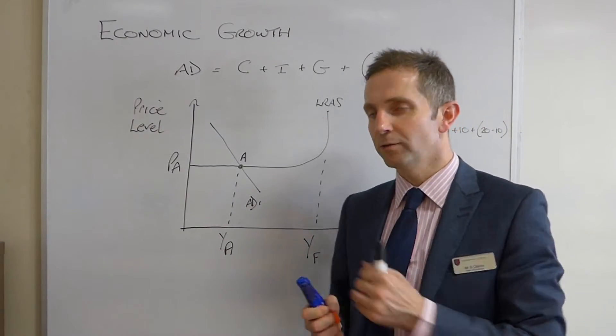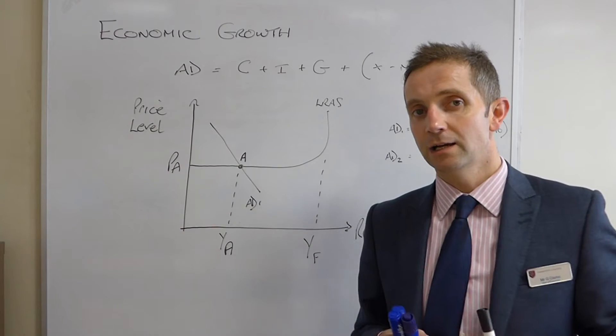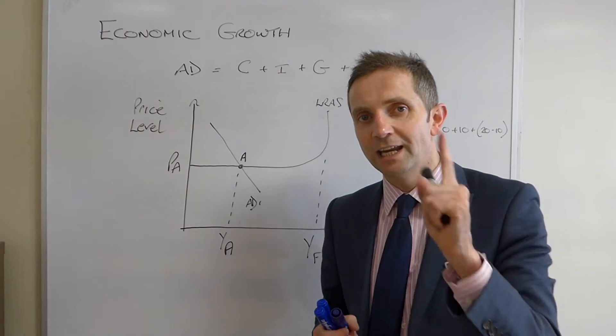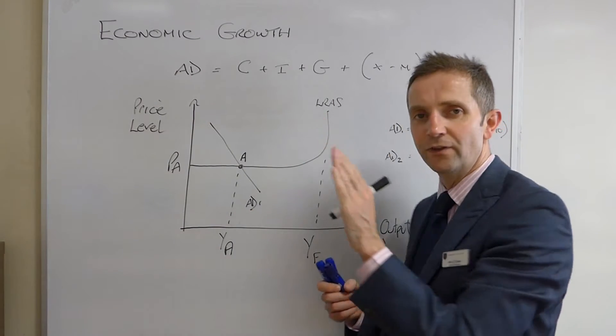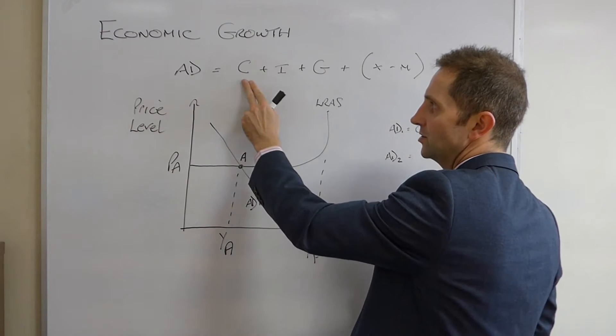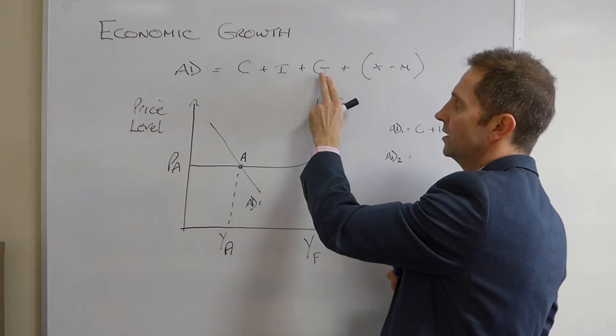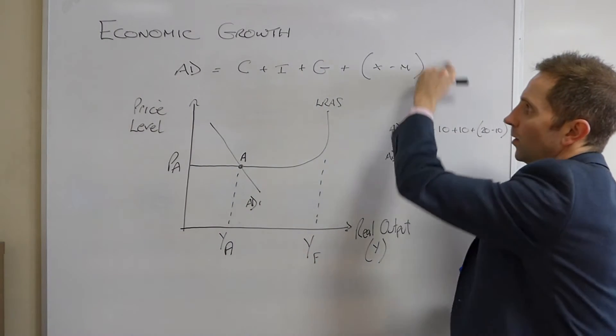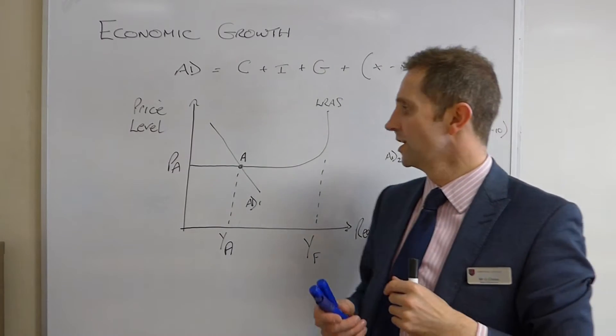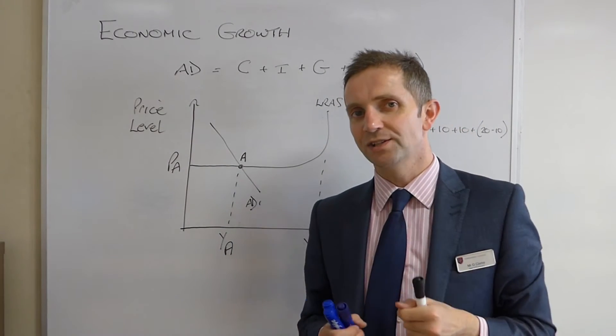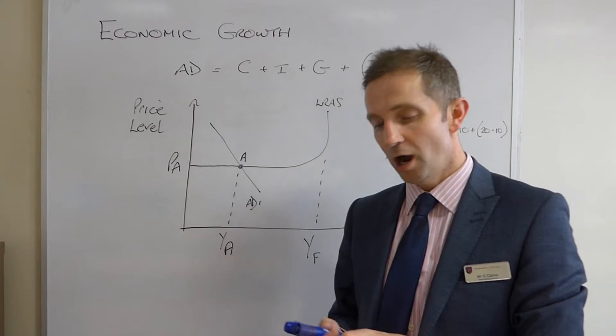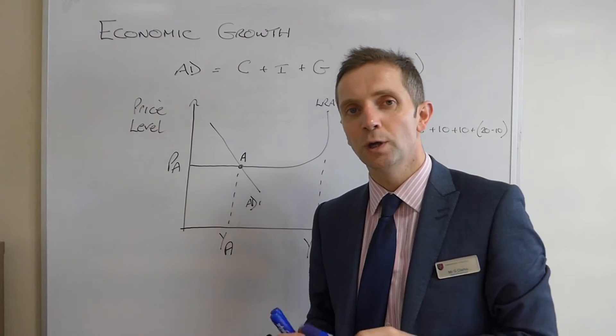So, we're going to be considering AD, and anything therefore, which increases the components of AD, so that would be consumption, investment, government expenditure, or as a whole, net exports. Anything which increases that will cause our AD curve to shift.